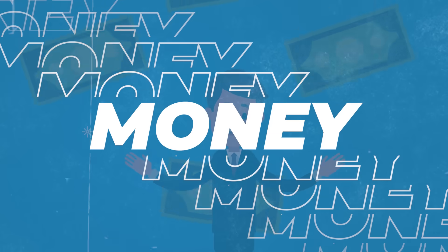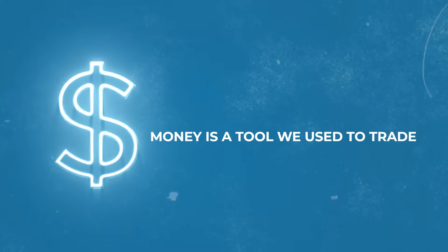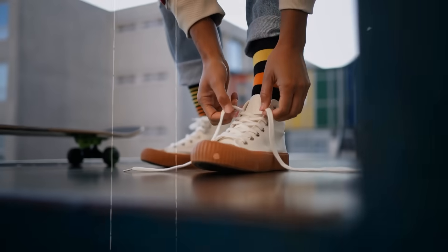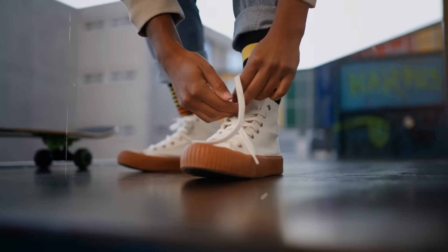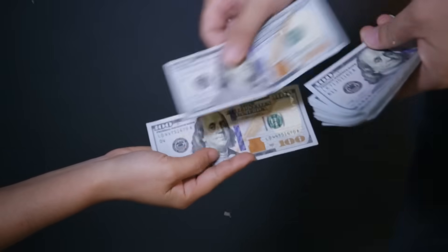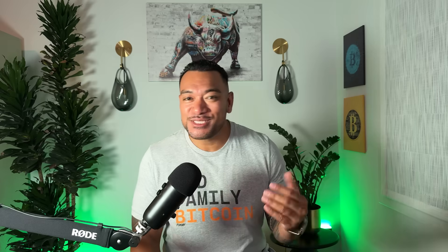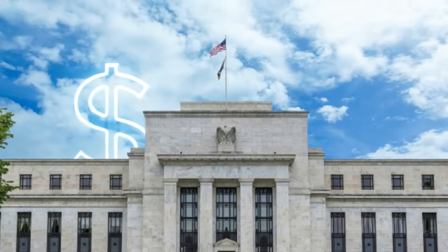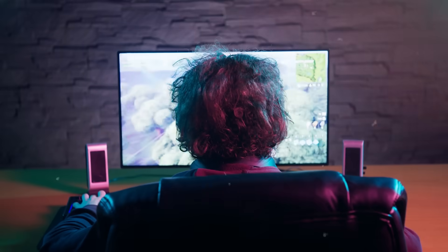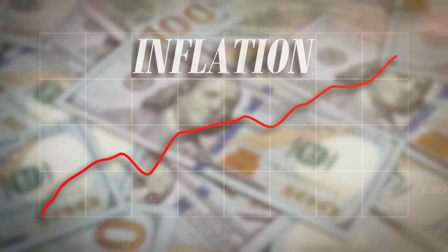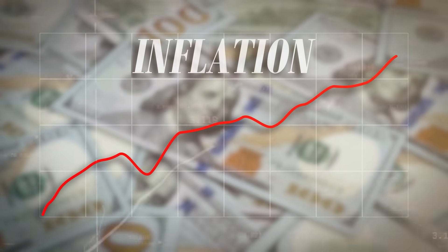So let's rewind — what even is money at its core? Money is just a tool we use to trade. Instead of swapping your sneakers for a video game, you use money because everybody agrees money has value. But here's the thing: our money, like dollars, is controlled by banks and governments. They can print more of it, freeze accounts, and change the rules whenever they want. Imagine you saved up 100 tokens in Fortnite and one day the game company just deleted half of them — that's basically what inflation feels like with dollars.